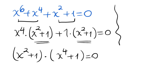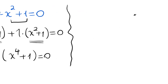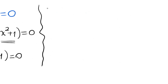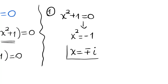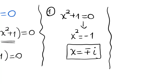So we will solve two parts. The first one is x squared plus 1 is equal to 0. This gives x squared is equal to negative 1, so we have x is equal to plus or minus i. The complex unit i squared is equal to negative 1 by definition, and negative i squared is also equal to negative 1.